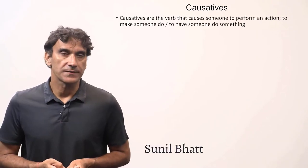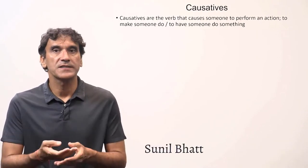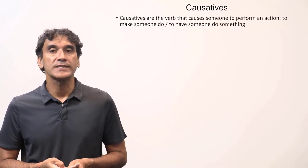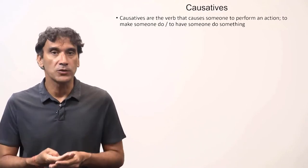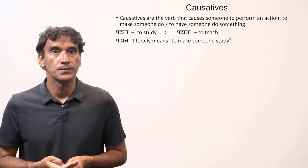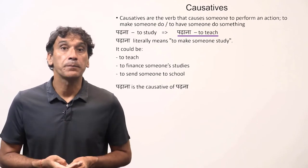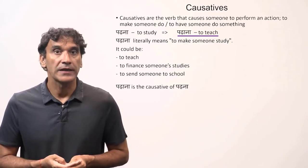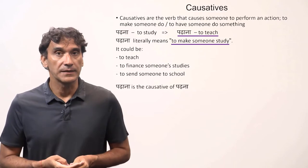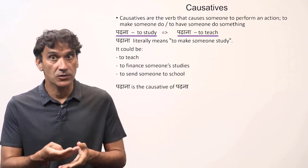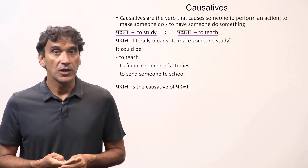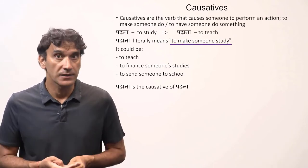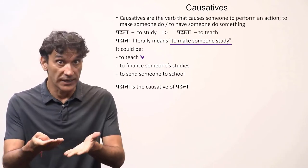The next grammar point is causatives. A causative is the verb that causes someone to perform an action. In English you can say 'to make someone do' or 'to have someone do'. We have come across the verb padhana — it means to teach. In fact, it means to make someone study. Padhana is a causative of padhna, meaning to study. Both verbs come from the same root.